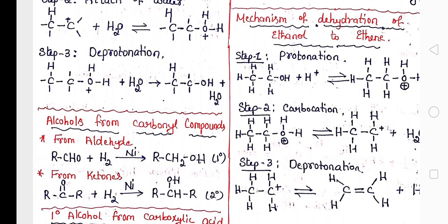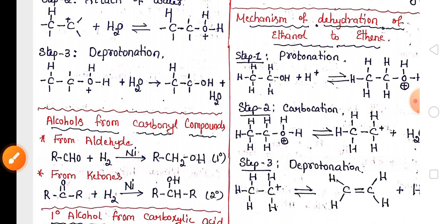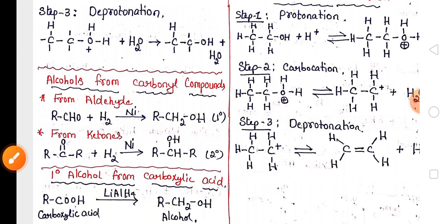This chapter has one more mechanism that is dehydration of ethanol to ethane. Dehydration means removal of water from ethanol and forms ethane. It is a three step mechanism, very important to the exam.